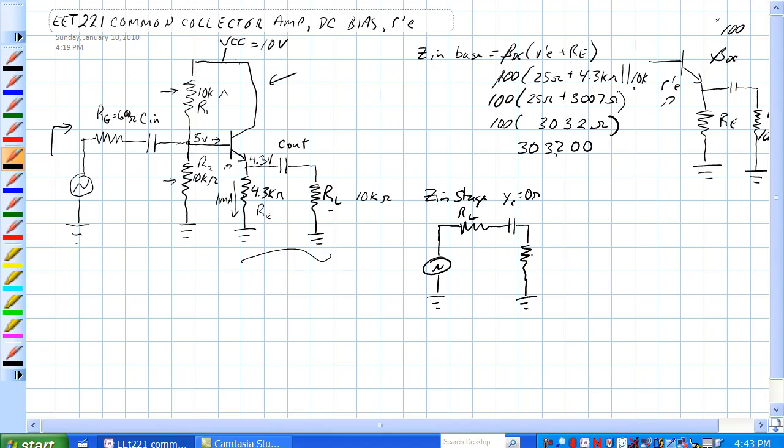And R2 does too. So R1 in parallel with R2. And then we have this ZN stage thing, or ZN base thing. So that's what the AC sees looking in.